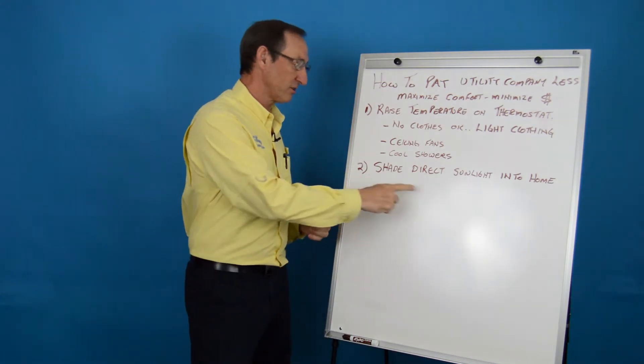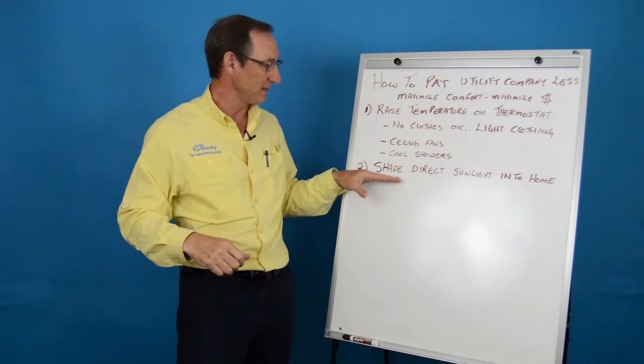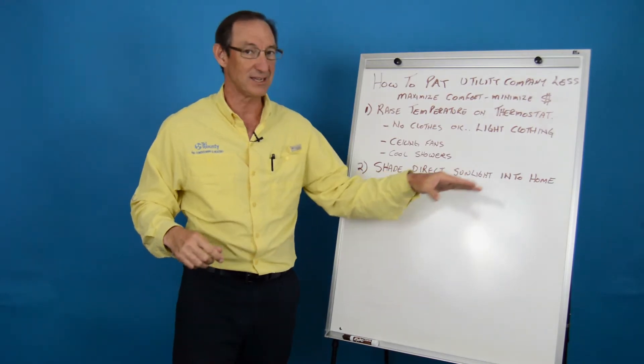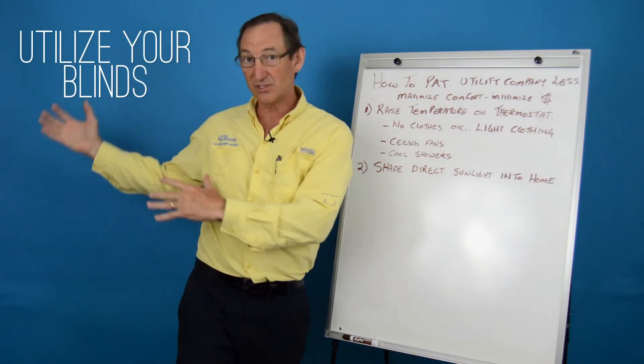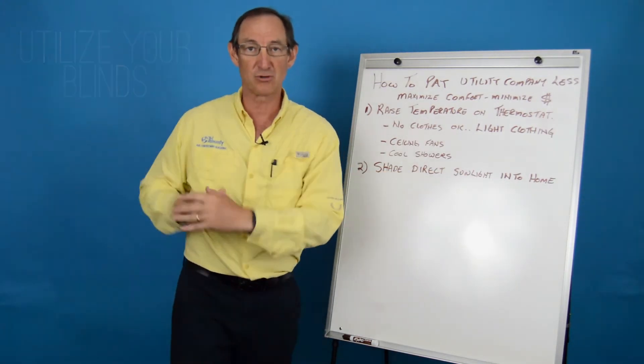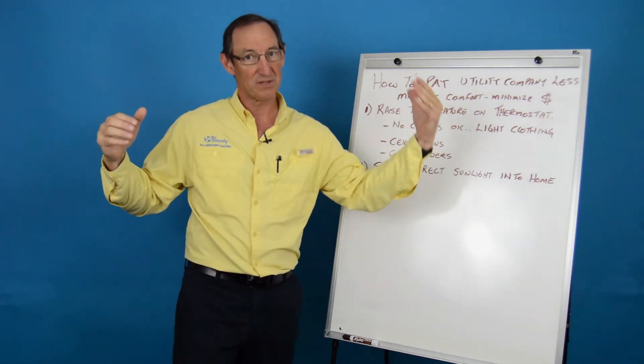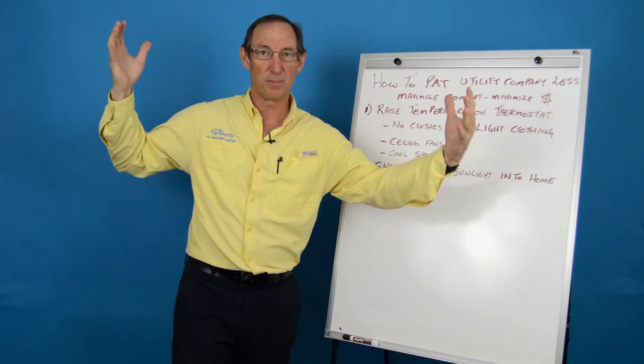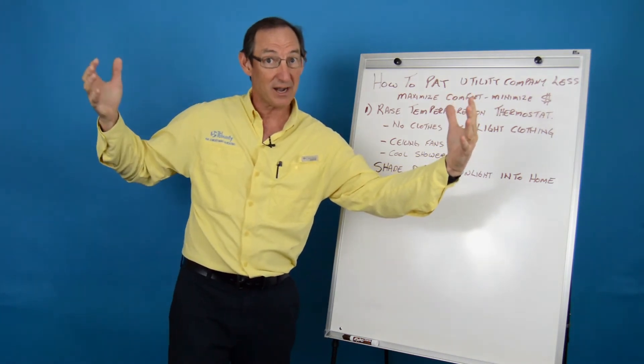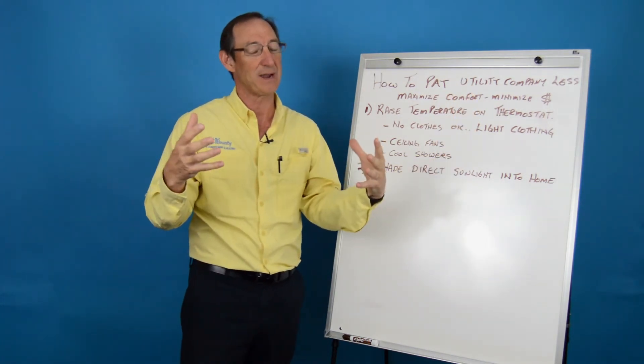And then also, something that could cost you nothing is to eliminate or shade the direct sunlight in your home. Sun comes up on the east, let's drop the blinds, shade it with the sun on the east, move to the south and to the west. You can open up those blinds on the east side of your home to let that indirect light come in.